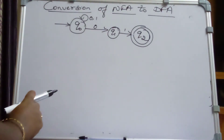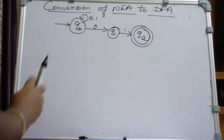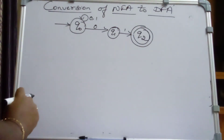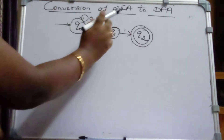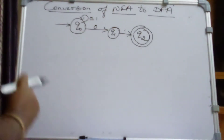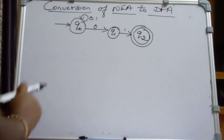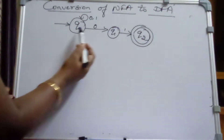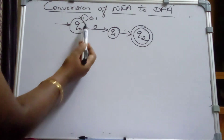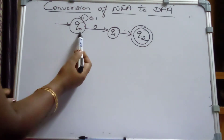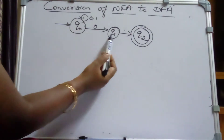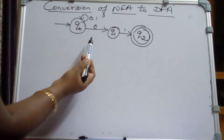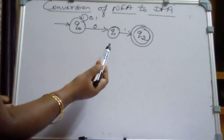Welcome to my channel. Today I am going to discuss how to convert an NFA to a DFA, that is conversion of non-deterministic finite state machine to deterministic finite state machine. If you observe this transition graph, we have three states Q0, Q1 and Q2. From state Q0 on reading 0, it is moving to Q0 as well as Q1. For a single input 0, it is moving to more than one state, which means it is an NFA.